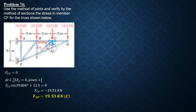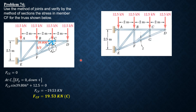By method of sections, we section this portion. Three members are cut by that section; two of them meet at D. We plan to sum up moments about D to directly compute FCF. Considering all forces to the right of section 1-1, the cut members are BC, CF, and FG — two of which meet at D.